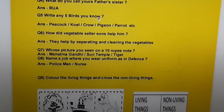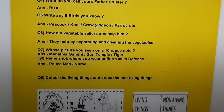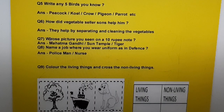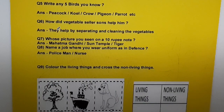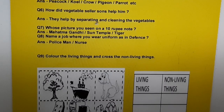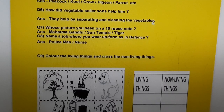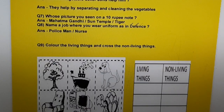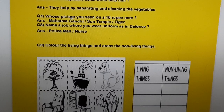Question five: Write any five birds you know. Answer: peacock, koel, crow, pigeon, parrot, etc. Question six: How did the vegetable seller's sons help him? Answer: They helped by separating and cleaning the vegetables.